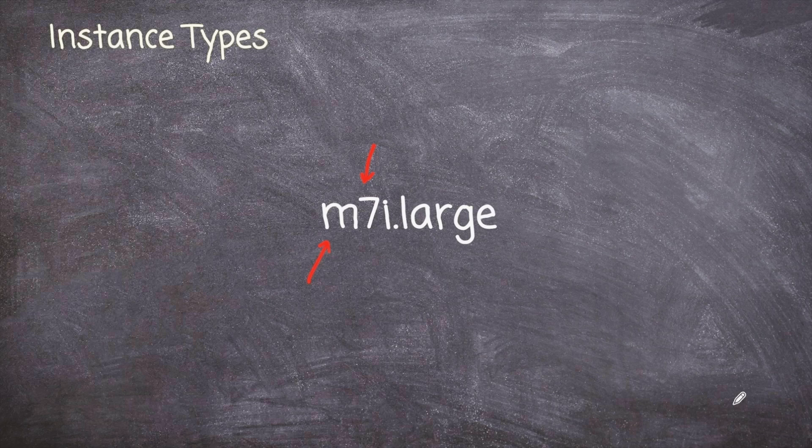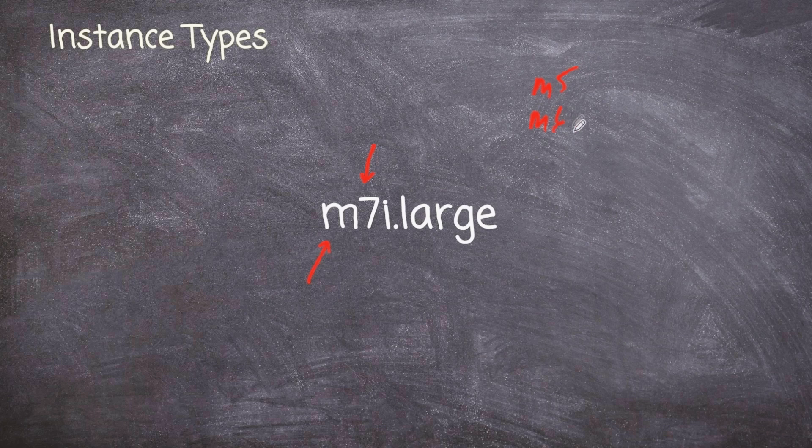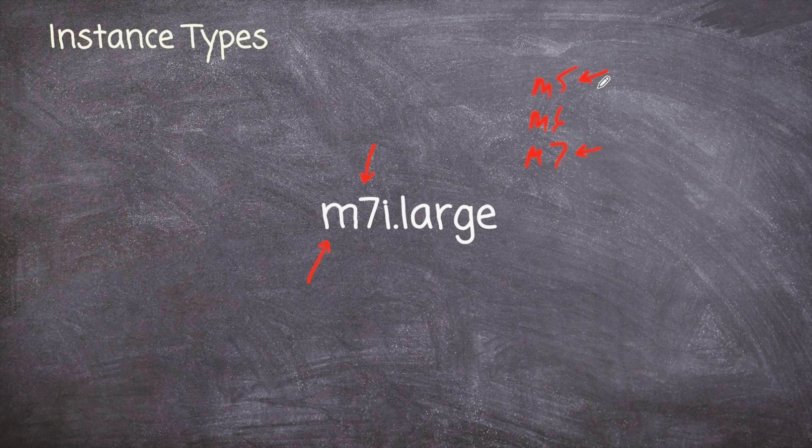Occasionally, AWS will come out with a new generation of instances that typically have more memory, better performance, maybe they cost less. But there will be cases where maybe they have an M5 instance type, an M6, and an M7. Now, if you're just going out there for the first time, you're probably going to choose the latest and greatest version. But there are other customers who have selected these when they were the latest and greatest and they've just stuck on them over the years, which is perfectly fine.